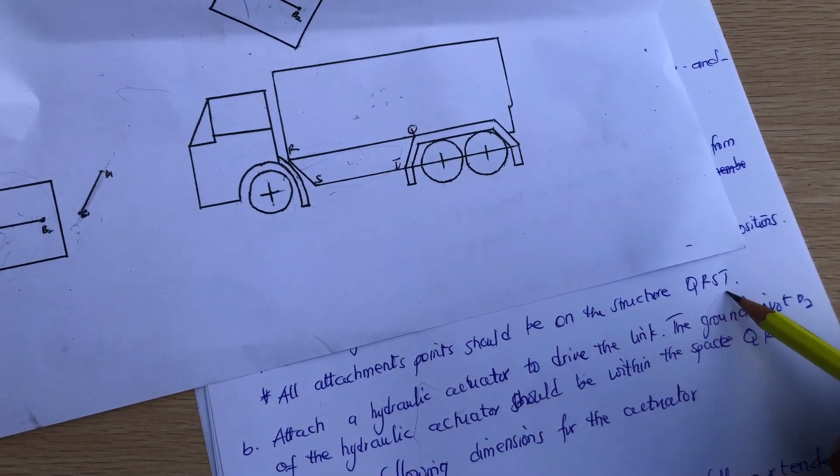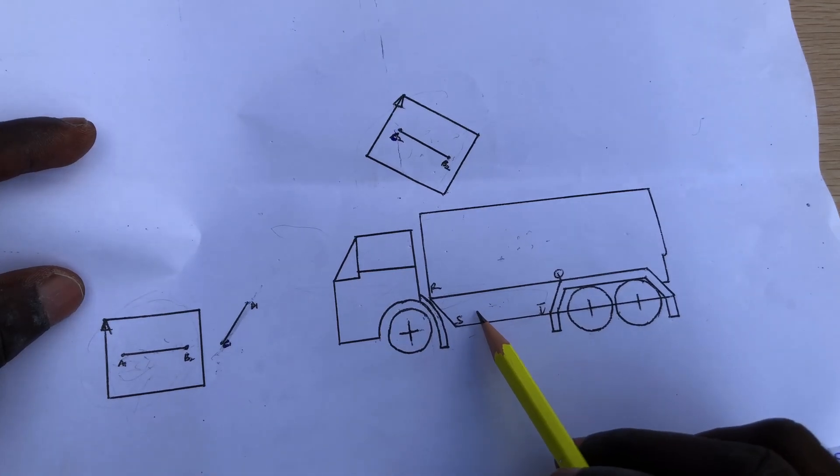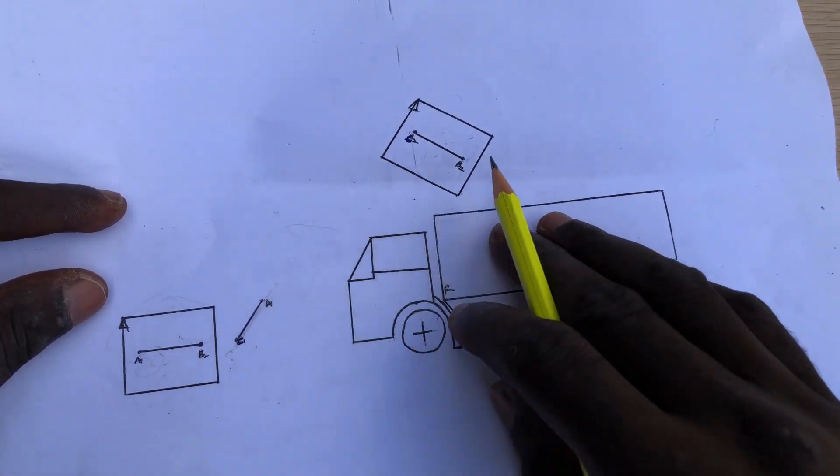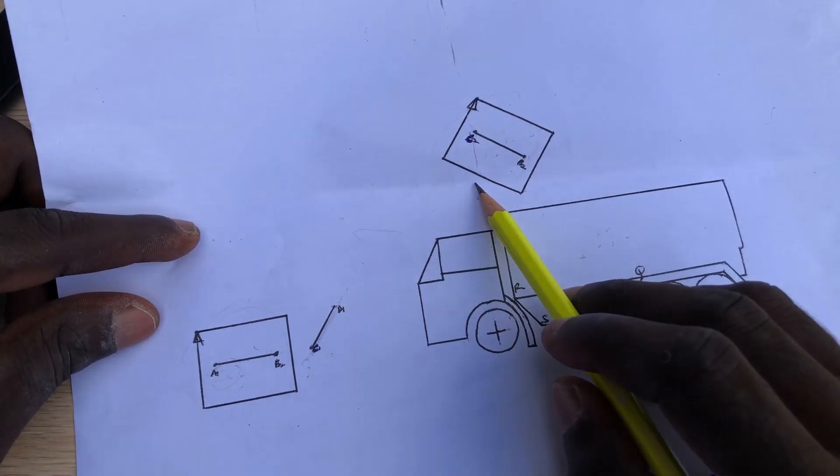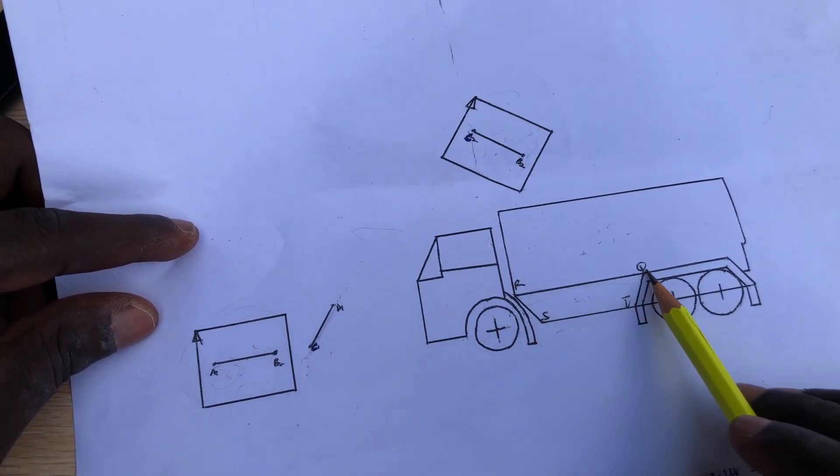So your pivot points and all those points that need to be attached to this vehicle to move the bin from position one to position two should be in this trapezium or this structure.